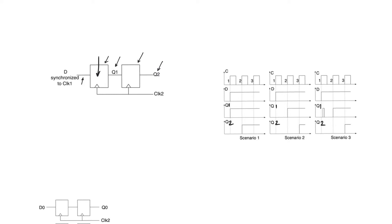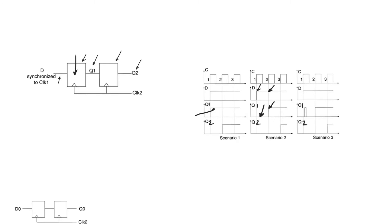There are three situations we can observe at Q1. It can settle at the correct value — in this case, VDD. It can settle at 0 volts, because we are sampling the data D input at the metastable point, so we don't know which value the inverter pair will settle at. But in that case, provided you have not removed input D, the next cycle Q1 is going to settle to the correct value, because you are now sampling comfortably within the window of non-metastability. The third situation is that Q1 could glitch — going up to VDD and then down to 0 volts — but again the next cycle it will go up to VDD.